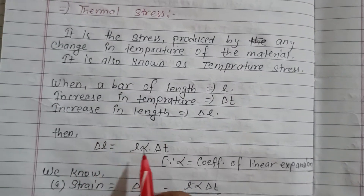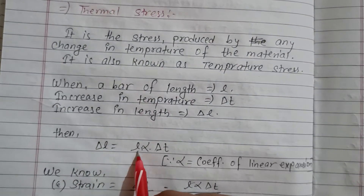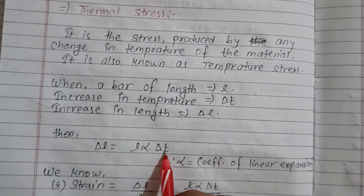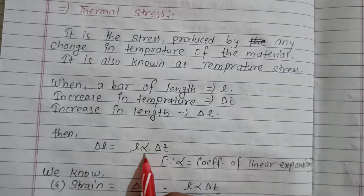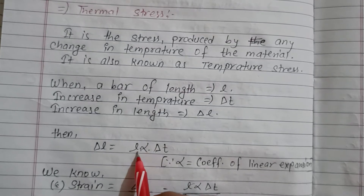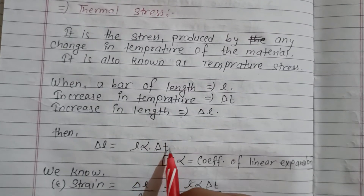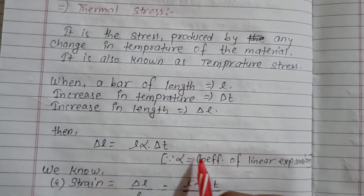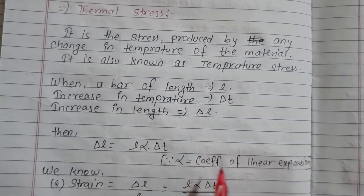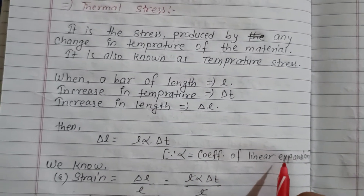For a bar of length L, delta-L equals L·alpha·delta-T, where alpha is the coefficient of linear expansion.